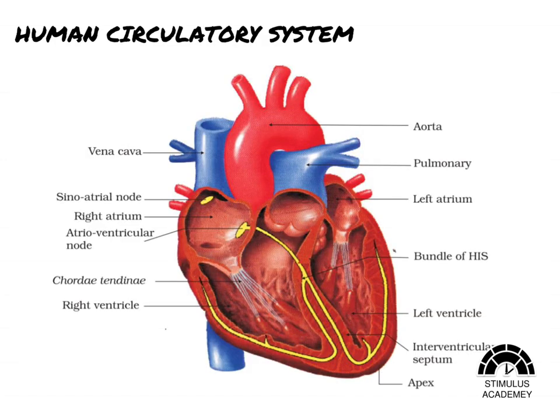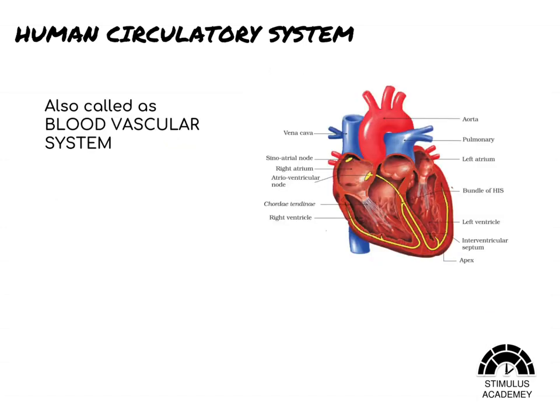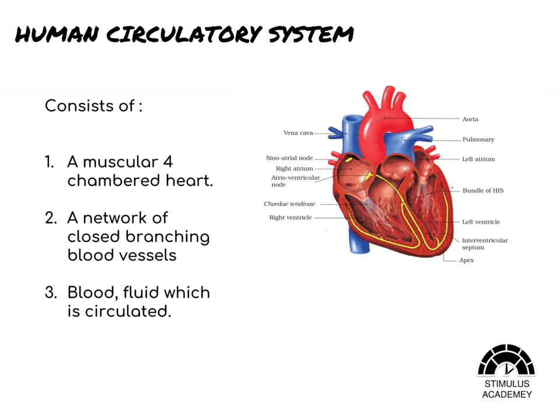Let us see this beautiful picture given in the NCERT book. It shows the main basic parts with labelling. The human circulatory system is also called the blood vascular system. It consists of a muscular 4-chambered heart, a network of closed branching blood vessels, and blood, the fluid which is circulated.